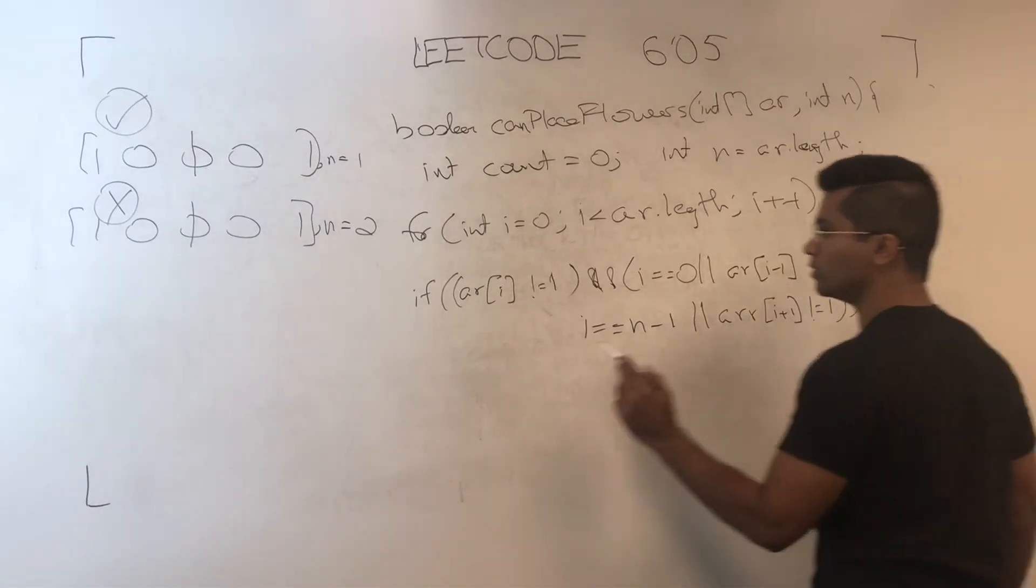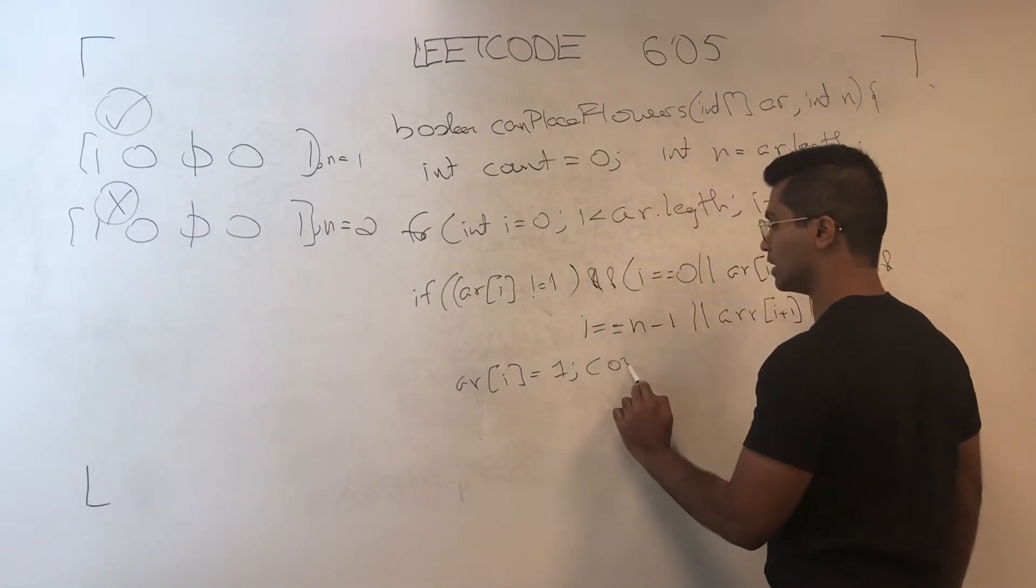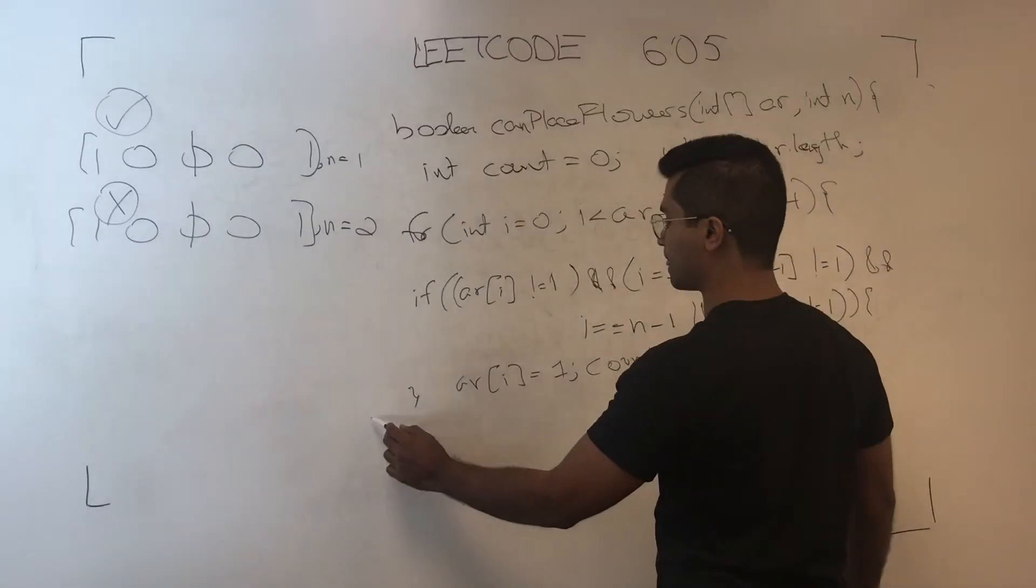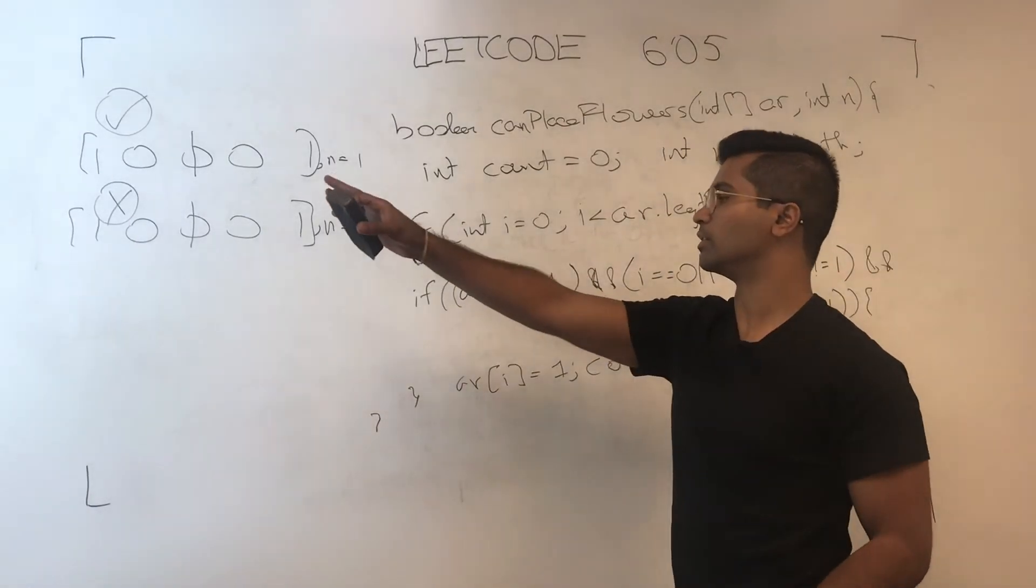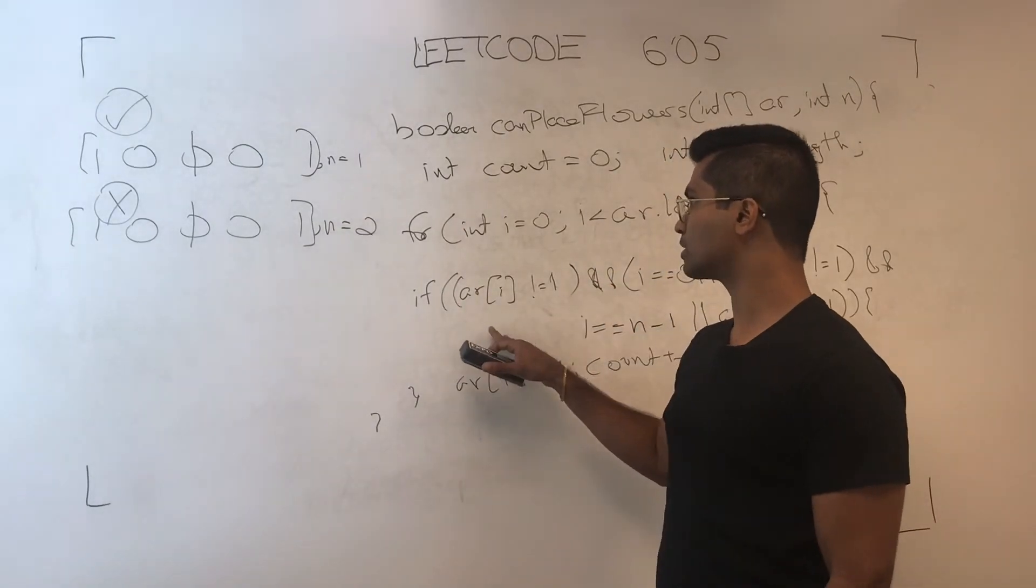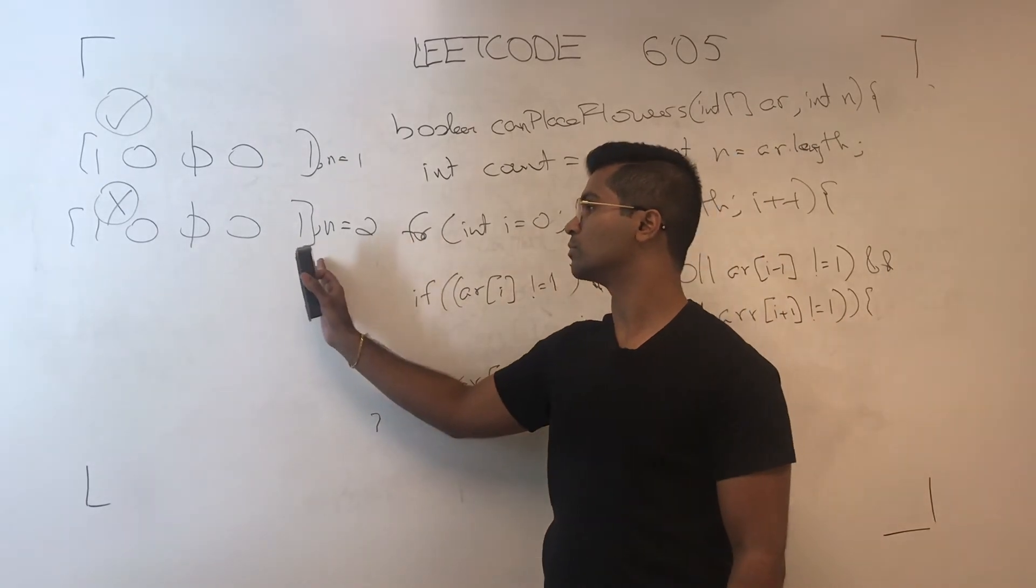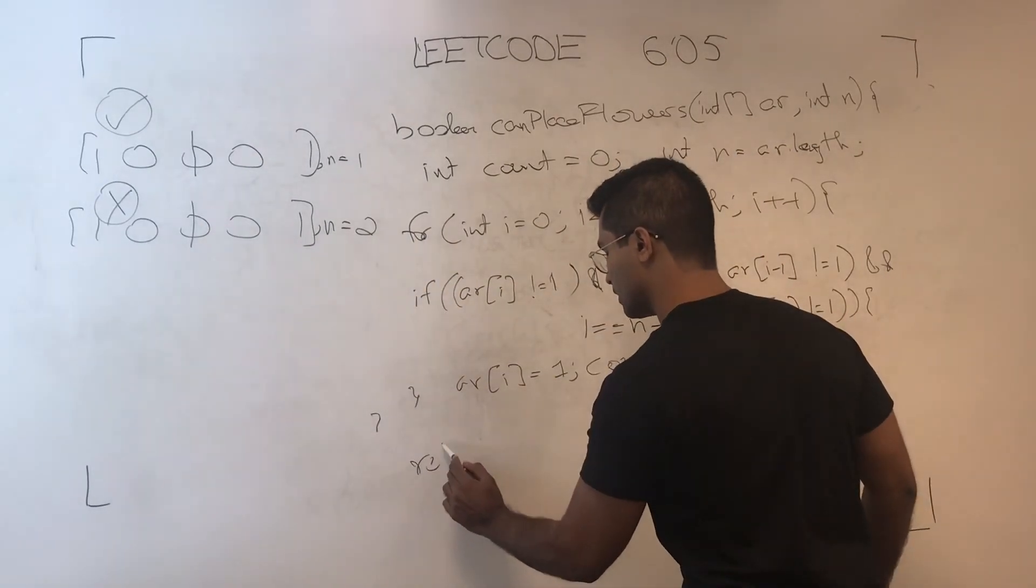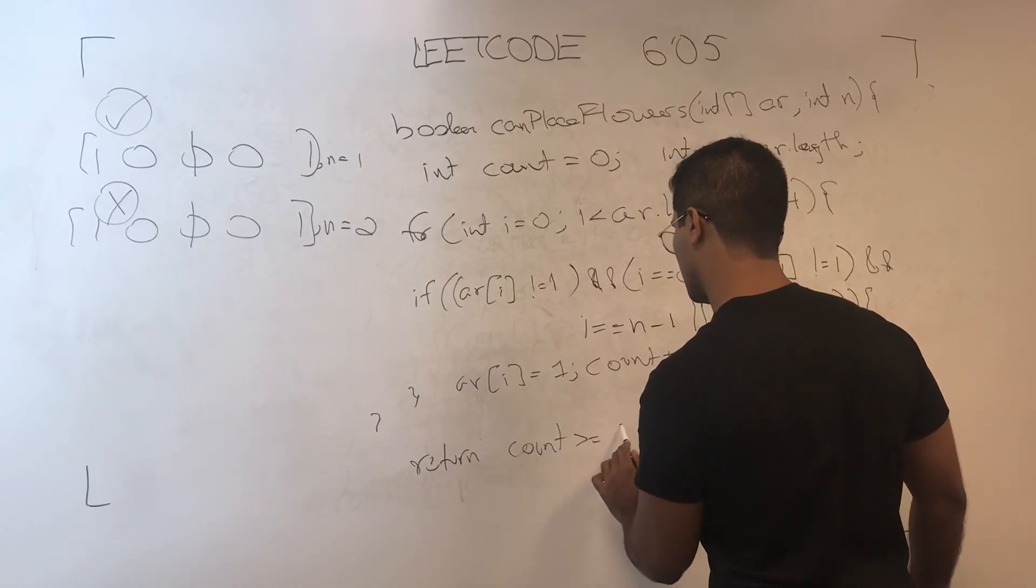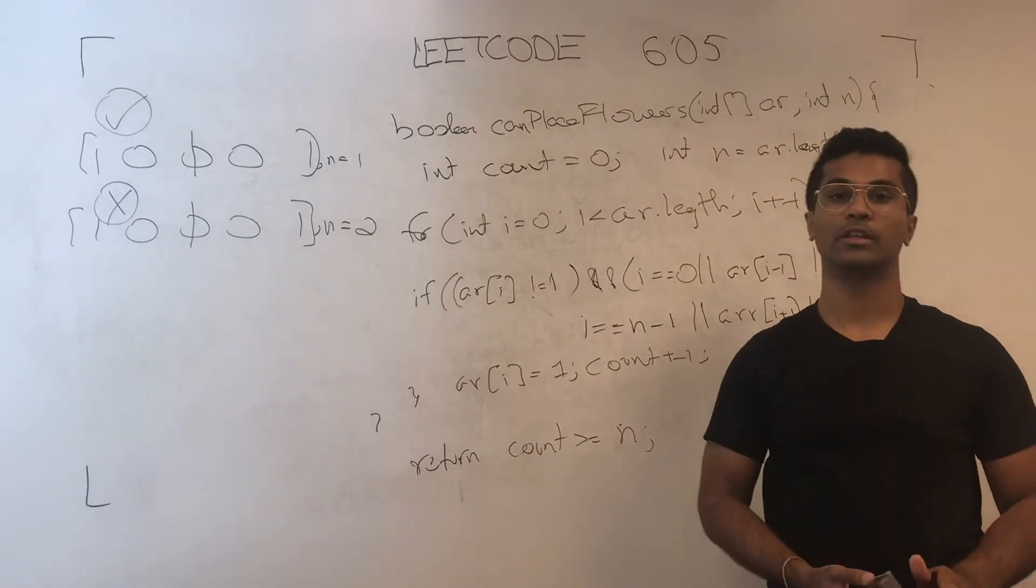Then what we can do is we can plant this to be one. And if so, we can increment the count, plus plus. And once we're done going through everything, we check if count is greater than or equal to the n. Return count greater than or equal to n. And that's how you can solve LeetCode 605.